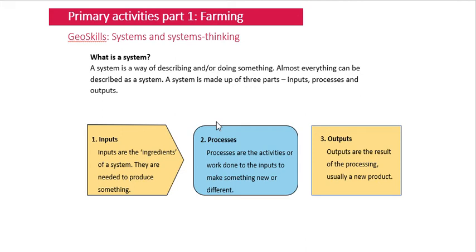A process is any activity or work done to the inputs — basically any job on the farm. For example, milking cows is a process, combine harvesting is a process, making silage is a process. Any job done on a farm is a process.